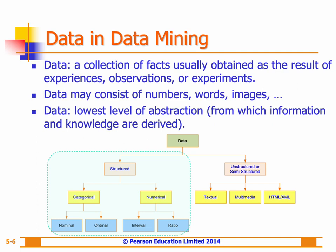Moving to the numerical type of structured data, it contains either interval or ratio data. Interval data are variables measured on interval scales — a common example being temperature on the Celsius scale. Ratio data includes measurements commonly found in physical sciences and engineering, such as mass, length, time, and energy.